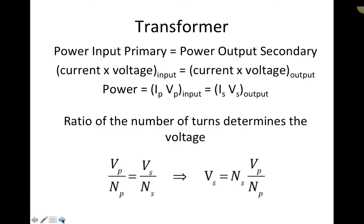The first important thing about transformers is that the power put into the primary in an ideal transformer is exactly equal to the power you get out in the secondary. You can't get something for nothing — you can't increase the amount of energy you get out. The power in equals the power out. Since power is current multiplied by voltage, the current in the primary times the primary voltage must equal the current in the secondary times the secondary voltage.